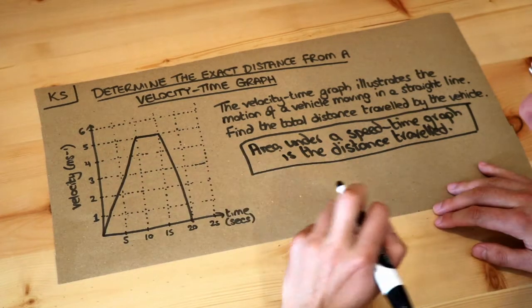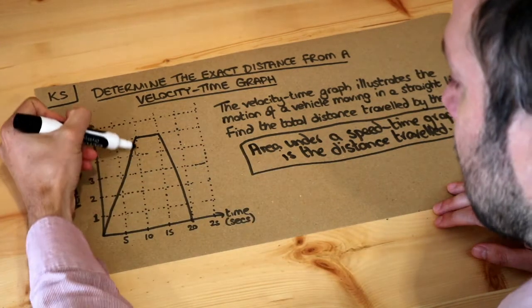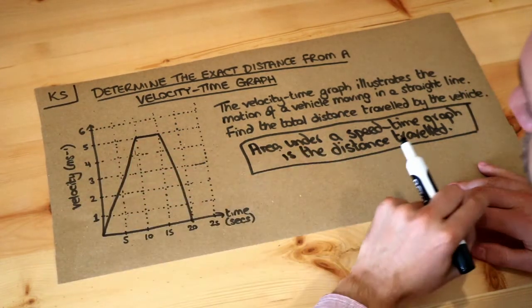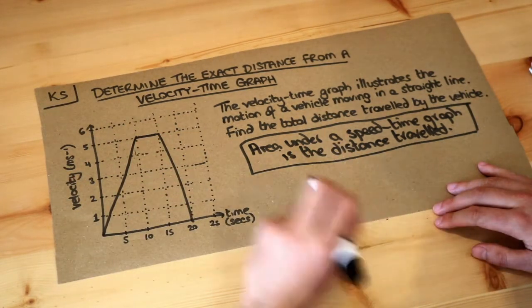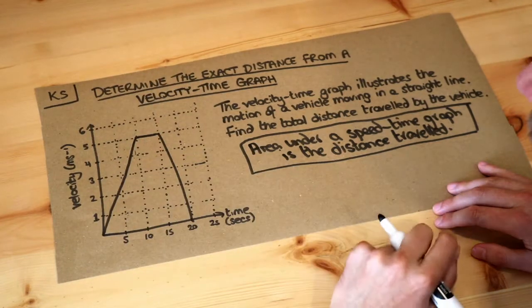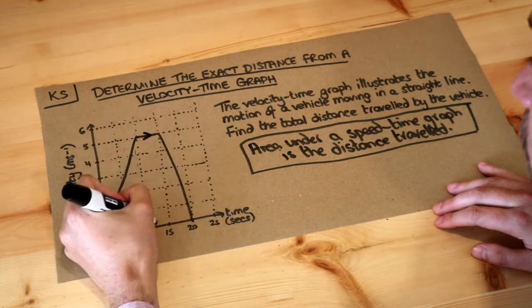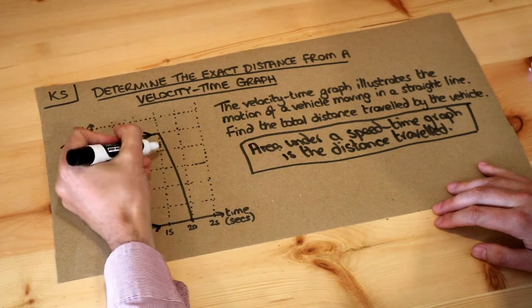Now there's different ways you could find the area of this shape. You could put a line up to here and a line up to here and then we'll have a rectangle in the middle and two triangles. But can you notice that this shape is a trapezium? We've got this edge here at the top is parallel to this edge at the bottom.